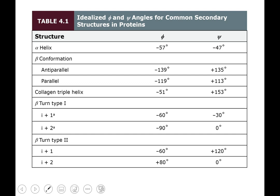Looking at a table of common phi and psi angles for these secondary structures: an alpha helix has phi of negative 57 and psi of negative 47. Beta conformation — either anti-parallel or parallel — has phi approximately double that of an alpha helix in the negative direction, and psi is a positive value. So for beta conformation you have negative phi and positive psi, whereas for alpha helix both are negative.